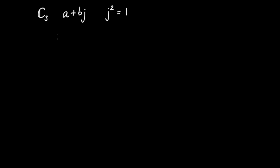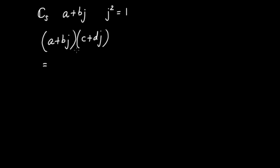What I'd like to do is derive the multiplication rule for multiplying two split complex numbers. Let me take one split complex number of the form A plus Bj, and a second, which I'll call C plus Dj. I'm going to multiply the A and the C first, and I'm going to multiply Bj times Dj, so I'm going to get Bd j squared. And then next, I'm going to have A times Dj.